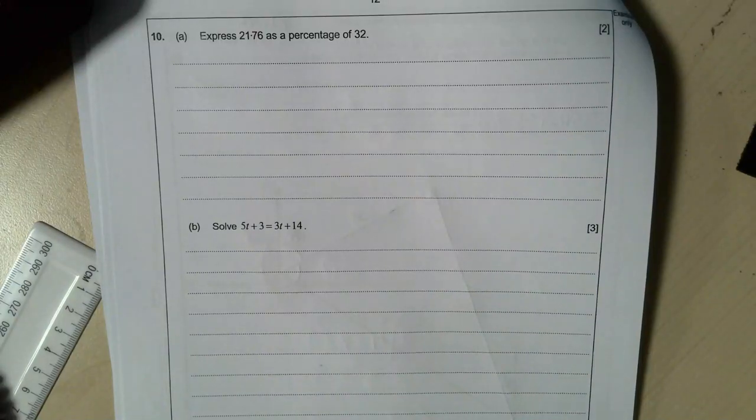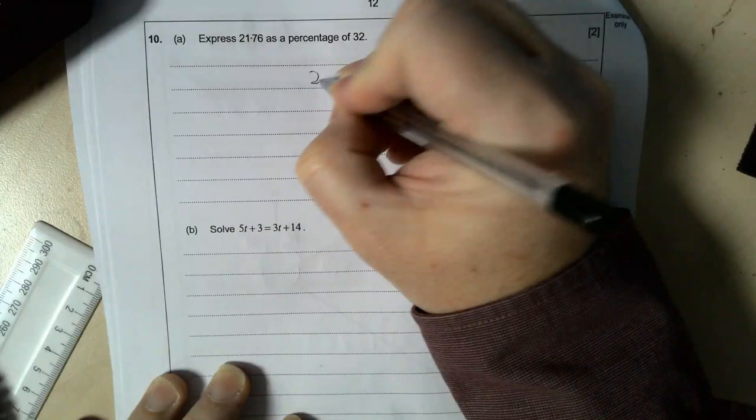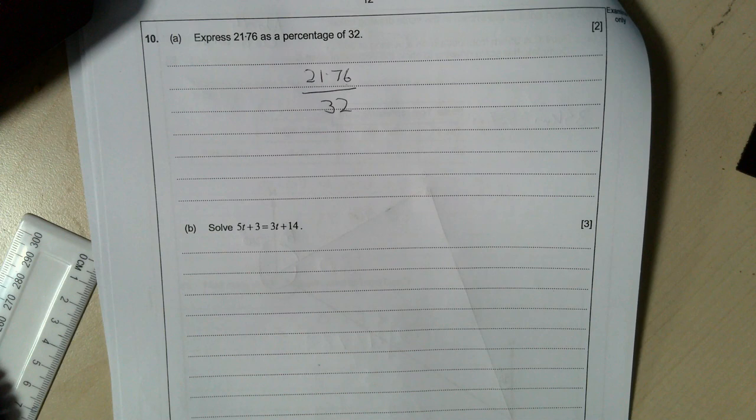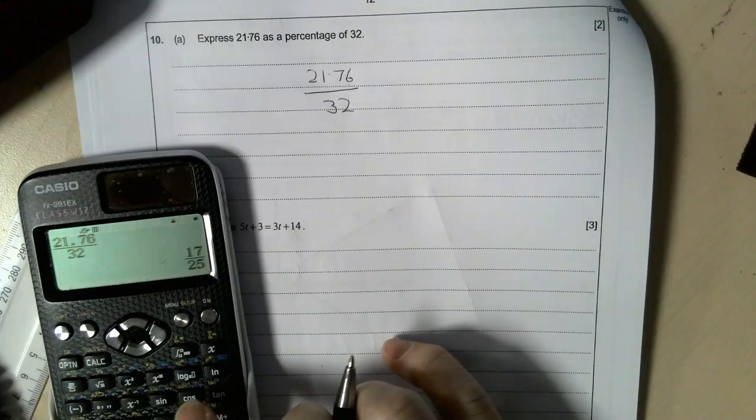If you're expressing 21.76 as a percentage of thirty... 21.76 out of 32, that line there means divide because you want what's 21.76 out of 32. So I'm doing 21.76 divided by 32...